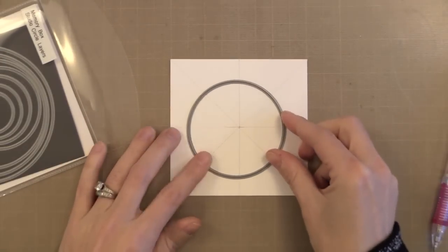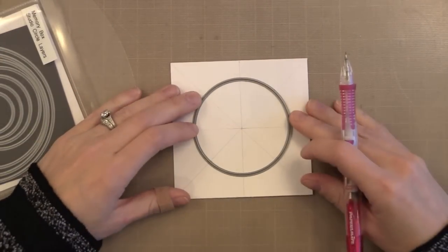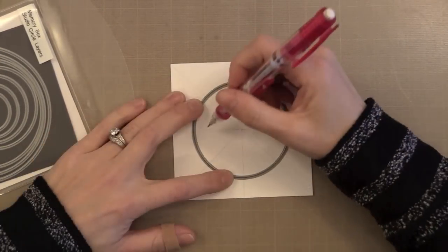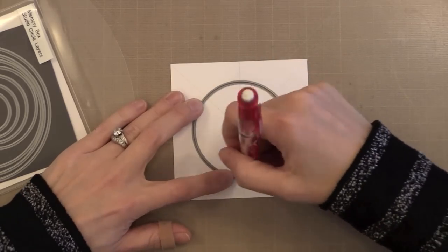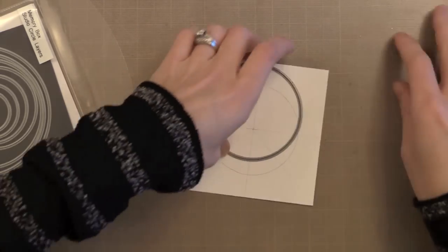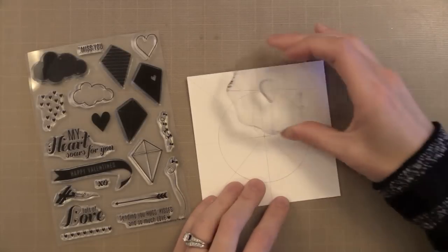Next I need a light pencil line in a circle that we can follow with our stamping. So I just grabbed a set of circle dies and I'm tracing one on here. This size just looked about right so I just went with it. But you can trace anything that's circle.